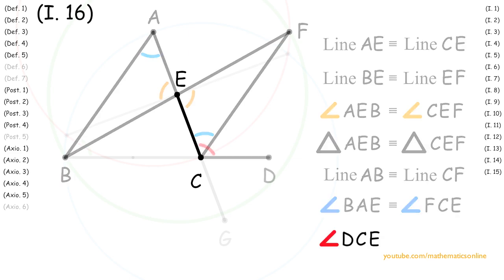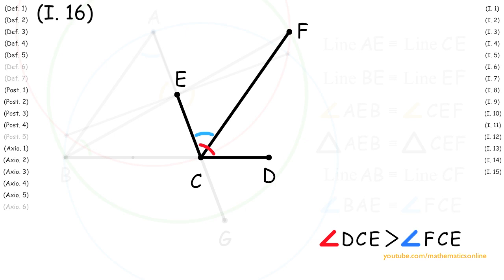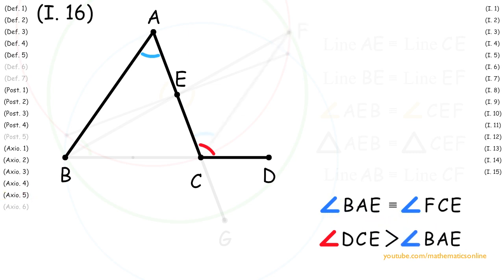Looking at angle DCE, we can see that by Axiom 5 it is greater than angle FCE. Now since angle BAE is congruent to angle FCE, then by Axiom 5 angle DCE is also greater than angle BAE.